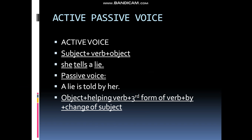The heading for active voice is: Subject + Verb + Object. That is the formula of an active sentence. For example: 'She tells a lie.' For passive voice, the formula is: Object + Helping Verb + Third Form of the Verb + By + Changed Subject. For example: 'A lie is told by her.'